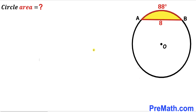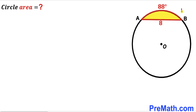Let's get started. Since we are interested in calculating the area of this circle with center O, we must find the radius of this circle first. I am going to label the radius of this circle as lowercase r, and our task is to find the value of radius r.